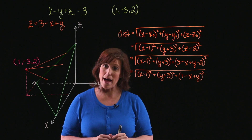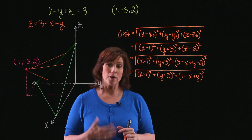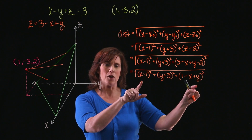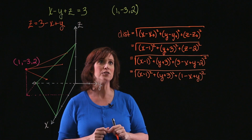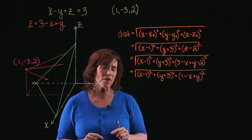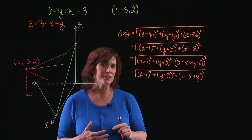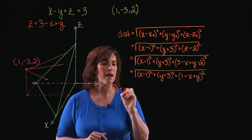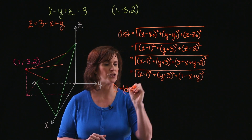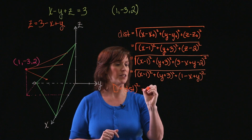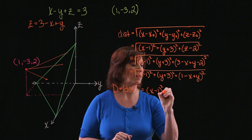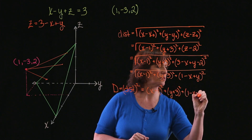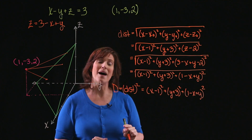This is what I want to minimize. To find the minimum, I need to find the critical points. It's fairly difficult to find critical points for this expression, so I'll note that if I minimize the square of the distance, I'll get the same values as if I minimize just the distance. I'll call it capital D — the squared distance — which gives me the quantity x minus 1 squared, plus the quantity y plus 3 squared, plus the quantity 1 minus x plus y squared.